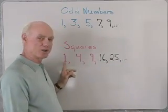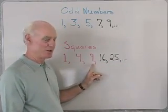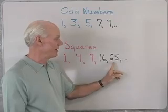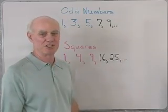So this is 1 squared, 2 squared, 3 squared, 4 squared, 5 squared. The next one would be 6 squared.